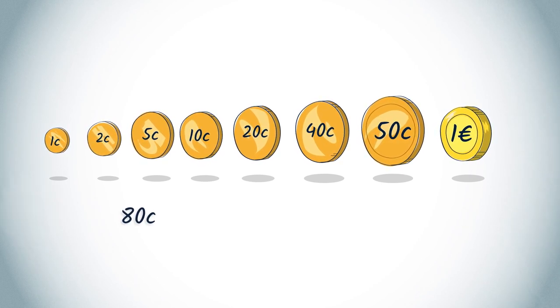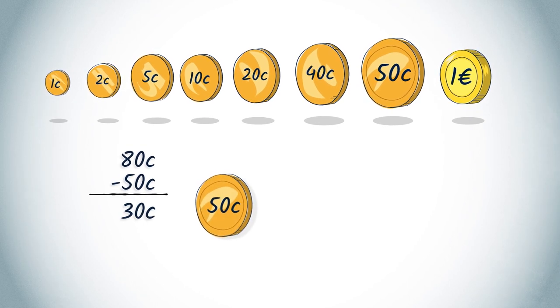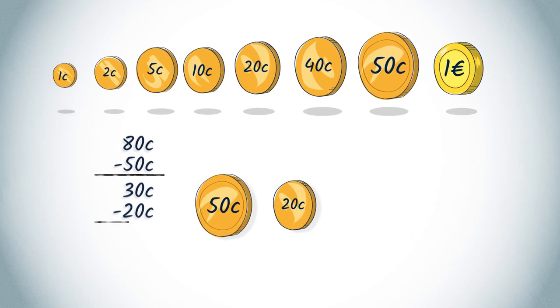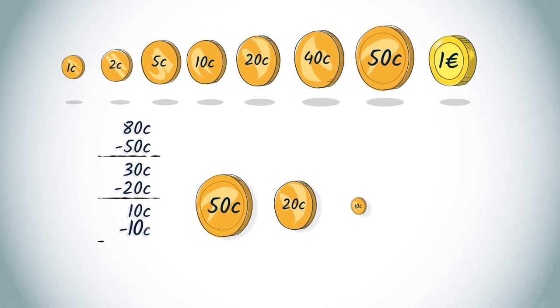The greedy algorithm will return 50 cents, 30 cents left, then 20 cents, 10 cents left, and 10 cents.